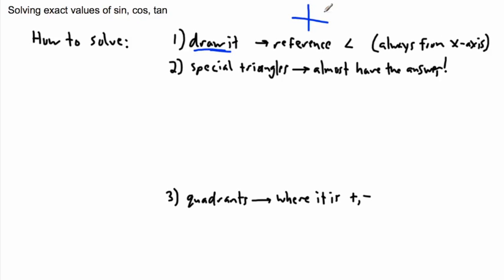What I mean by that is you look at where your angle sits on the unit circle. If it sits here, you draw a reference angle — whatever it is from the x-axis. So maybe it finished down here, and I would draw my reference angle there. Then I use that reference angle, convert it to degrees if needed, and use special triangles.